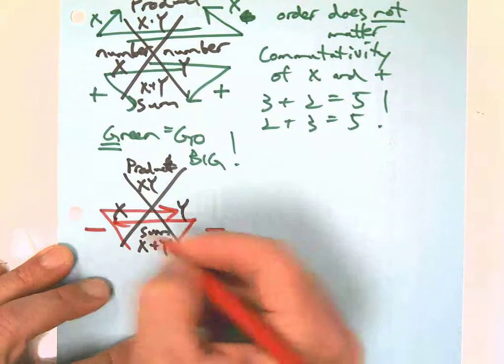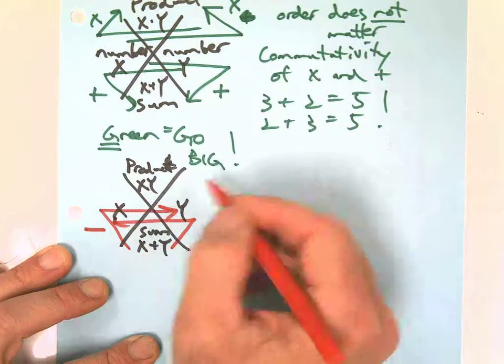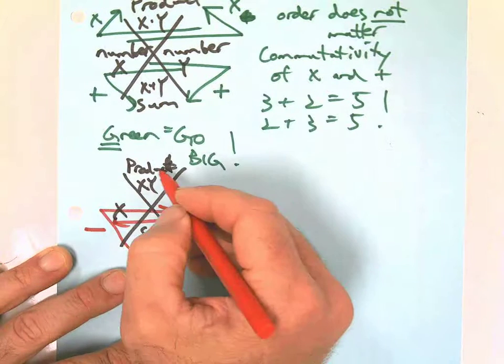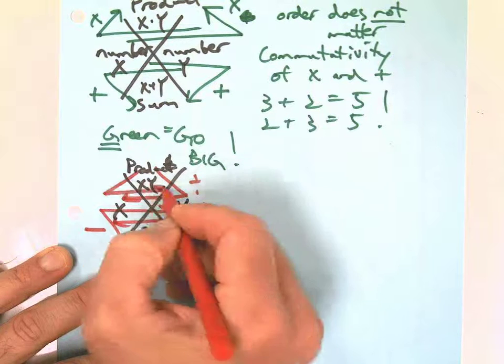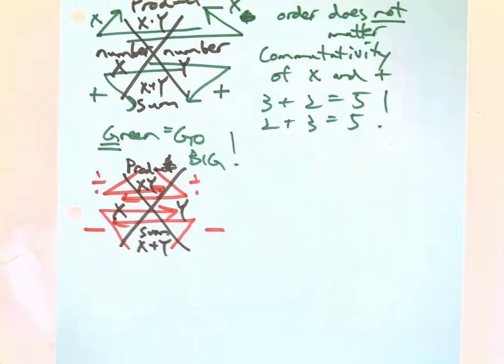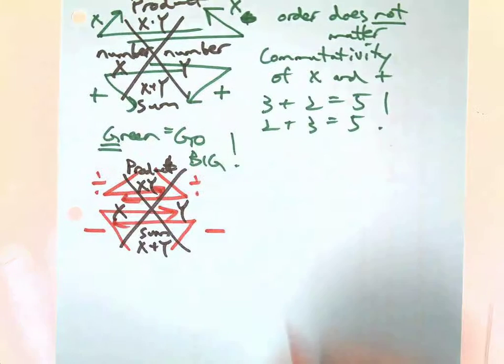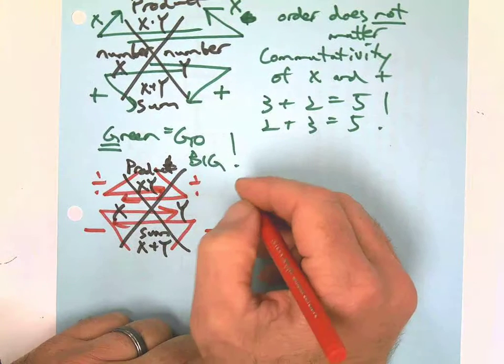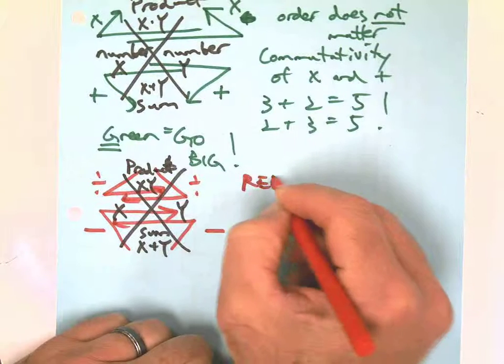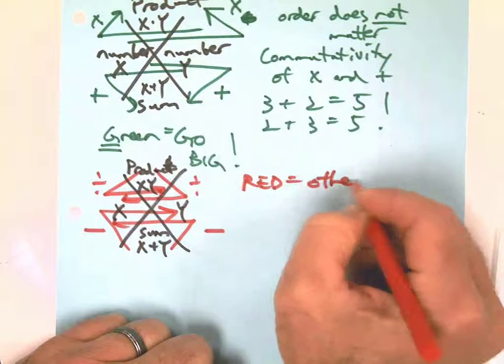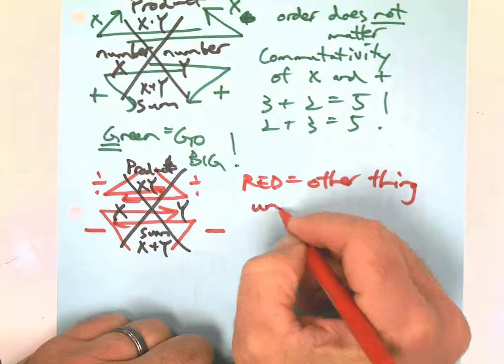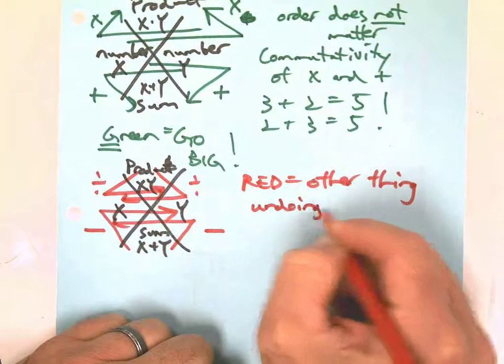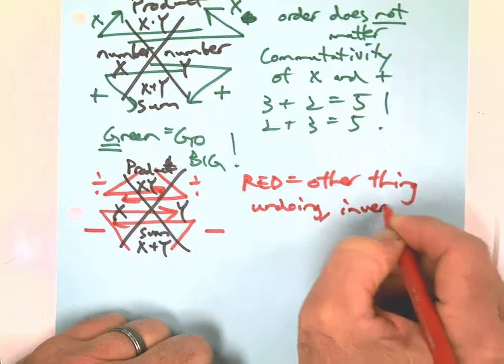So we're going to use red when we have the sum and we subtract to find the missing number, or if we have the product, then we divide to find the missing number. Okay, so that's going to be red is the other thing.